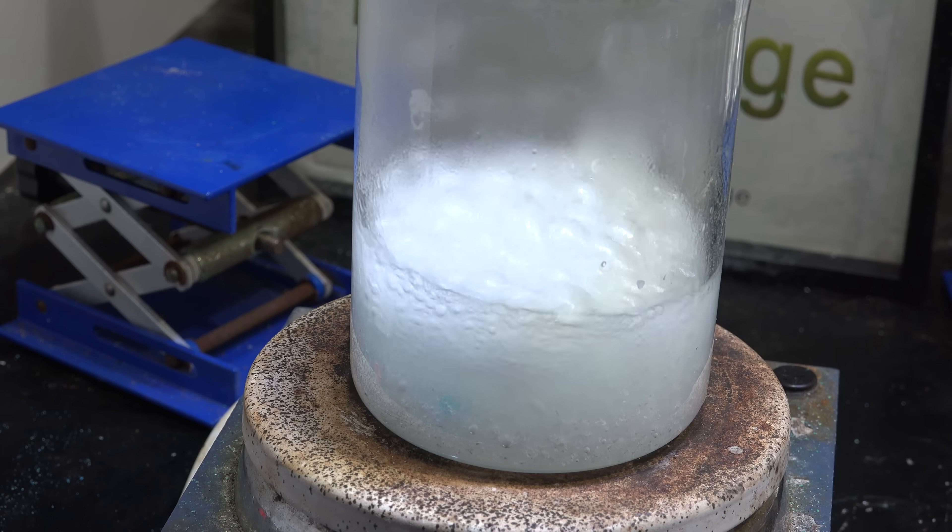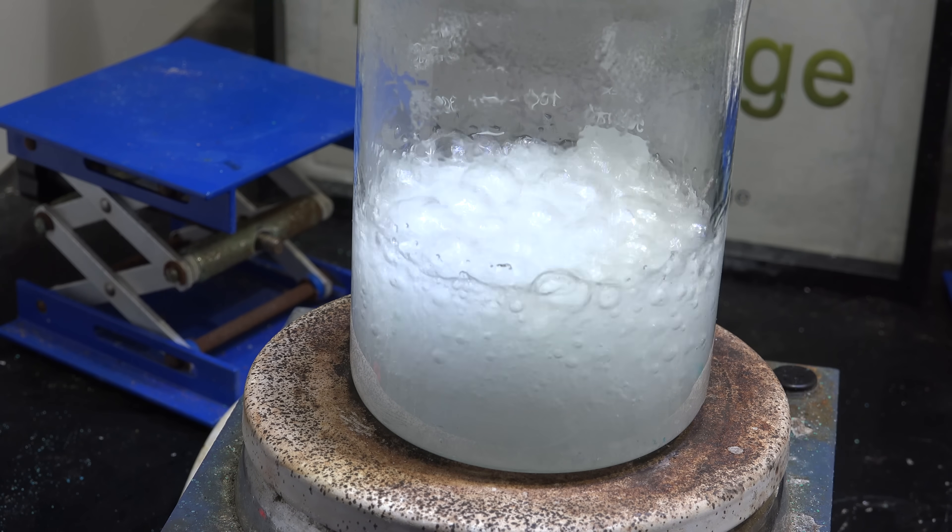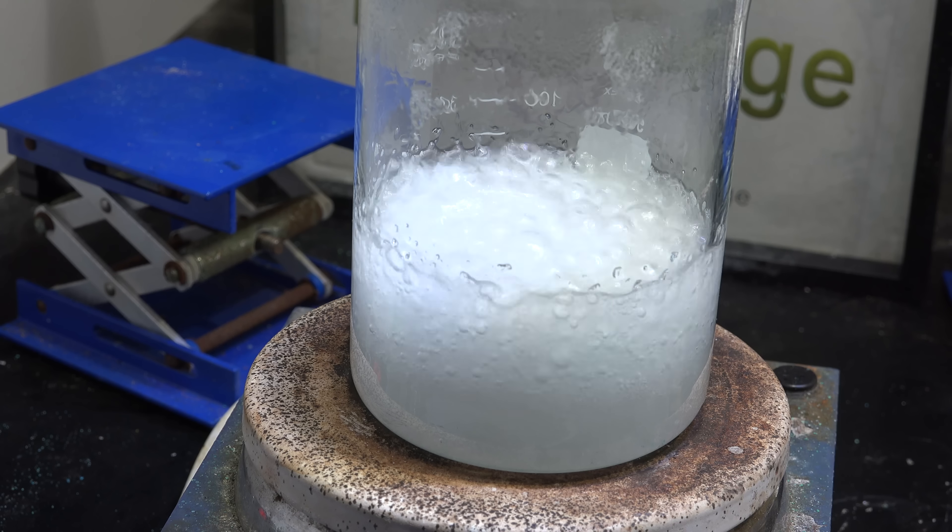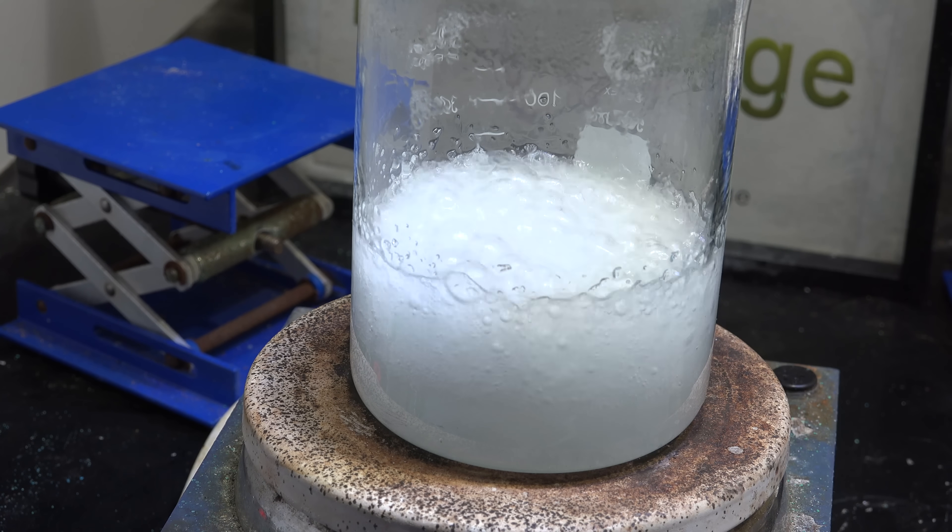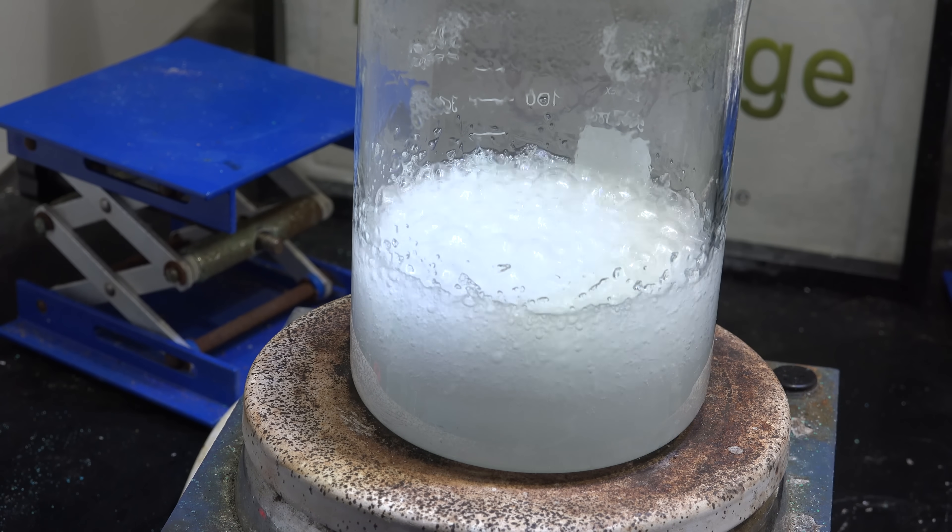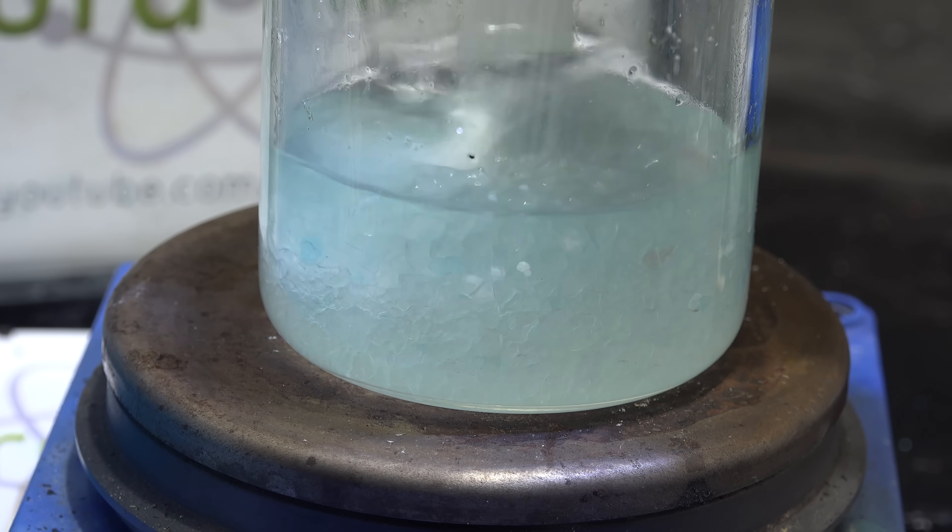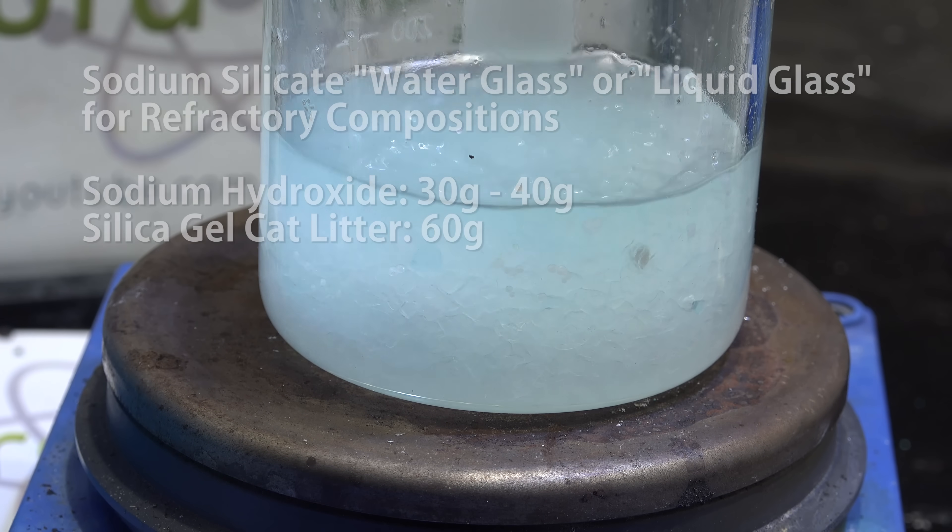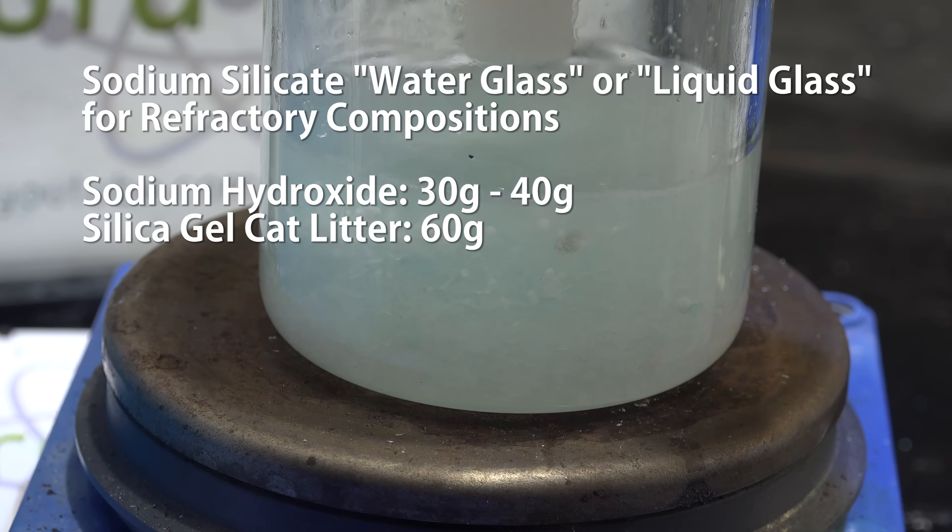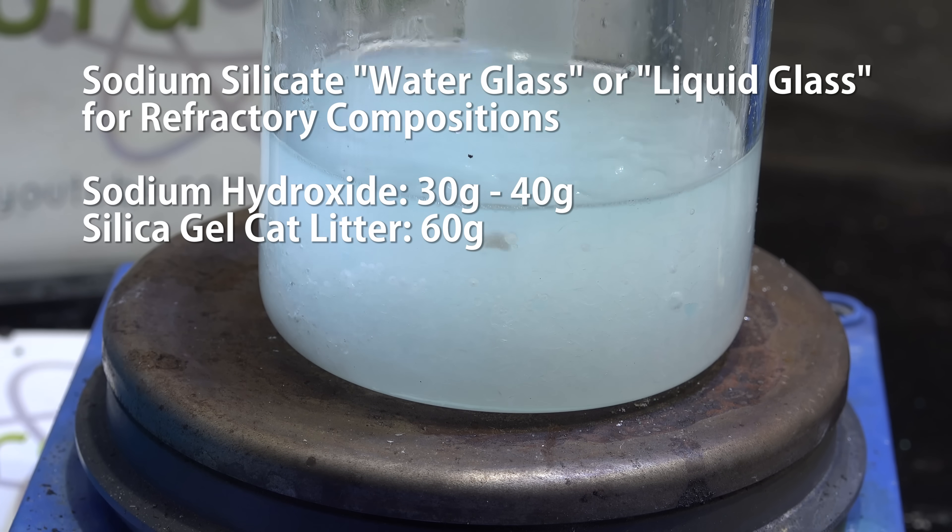Now a special note for those of you using sodium silicate for making insulating liners, forges, and other refractory uses. Those mixtures require a silica-rich mixture rather than the sodium hydroxide-rich mixture I'm showing here. So you'll want to modify the original procedure to use a 3 to 6 or 4 to 6 ratio of sodium hydroxide to silica gel rather than the 8 to 6 ratio I presented here.